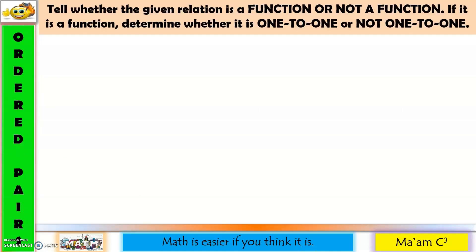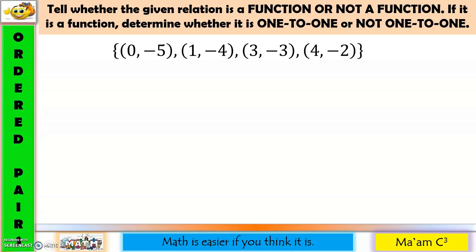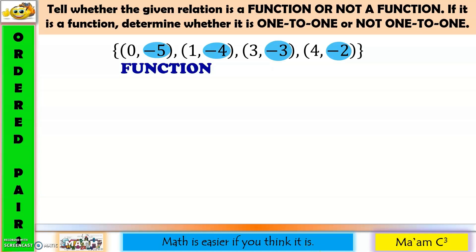Tell whether the given relation is a function or not a function. If it is a function, determine whether it is one-to-one or not one-to-one. Let's have ordered pairs first. Let us examine the x values: 0, 1, 3, 4. Is there any x value that has been repeated? None. Therefore, this is a function. Now let us examine the y values: negative 5, negative 4, negative 3, negative 2. Is there any y value that has been repeated? None. Therefore, this is a one-to-one function.